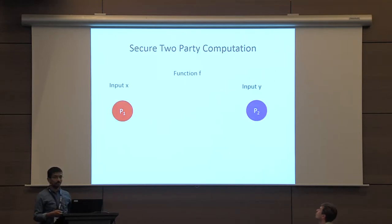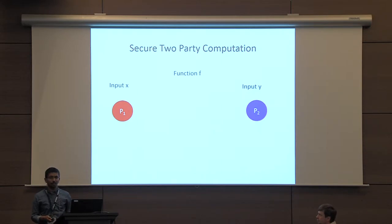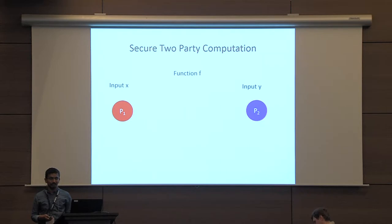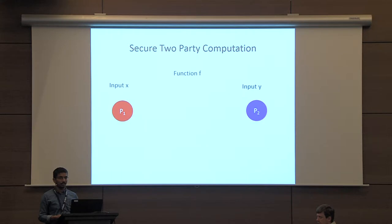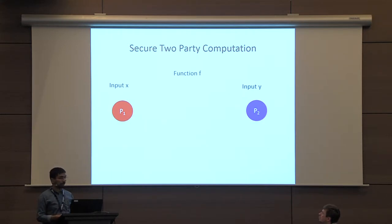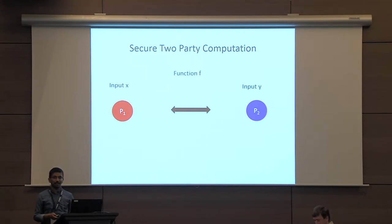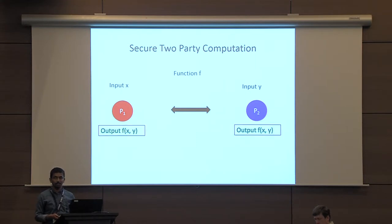Before we get into our results, let's review what secure two-party computation is. Let's say there are two parties, P1 and P2, with inputs X and Y respectively, and they want to jointly evaluate some function F on their two inputs. They take part in some protocol with several rounds and several messages being exchanged, and finally each party learns the output of the function on both their inputs.